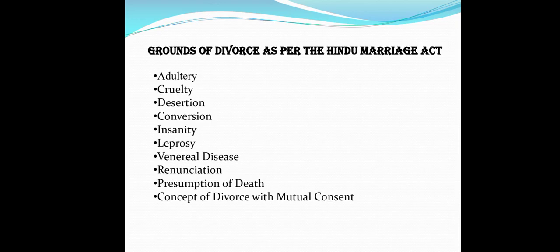The fifth ground is Insanity. Insanity means when a person is of unsound mind. Insanity as a ground for divorce has two requirements: first, the respondent has been incurably of unsound mind; and second, the respondent has been suffering continuously from a mental disorder of such kind and to such an extent that the petitioner cannot reasonably be expected to live with the respondent. The sixth ground is Leprosy, which is an infectious disease of the skin. Since this type of disease is dangerous, it is considered a valid ground for divorce.